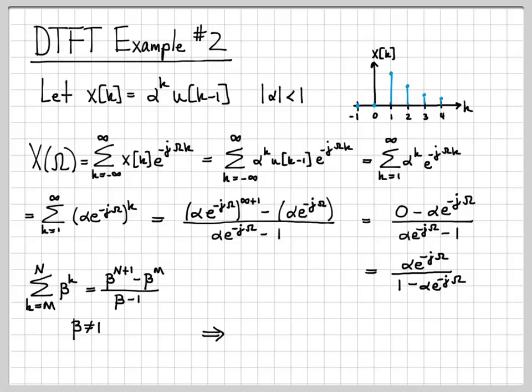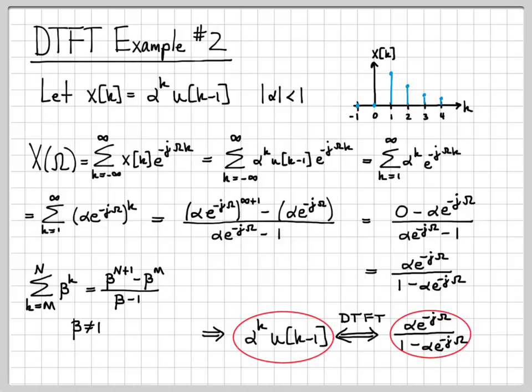So what we've done is we have just computed that the discrete time Fourier transform of this signal alpha to the k u of k minus 1 is this quantity right here. It's a complex valued quantity that is a function of omega. So this is the DTFT of this discrete time signal. Another way of saying it is that this discrete time signal and this function of omega here are DTFT pairs. So that's what we wanted to compute. We have done what we wanted to do. We computed the DTFT of this discrete time signal x of k.